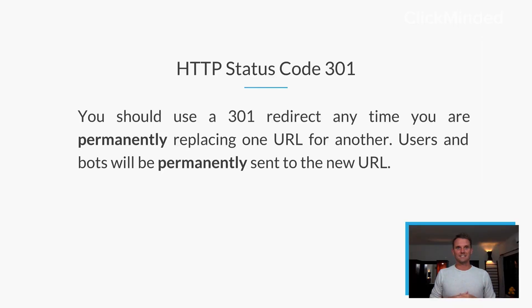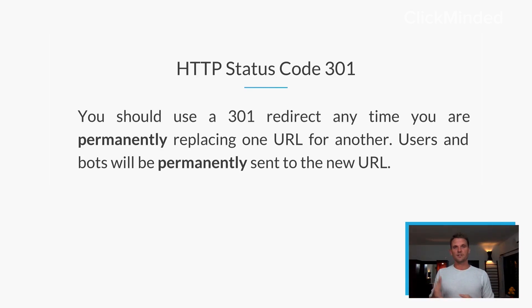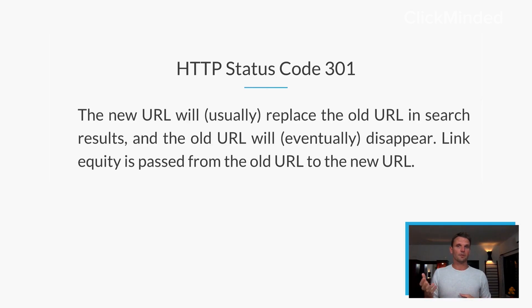Those are the basics around the HTTP protocol. Now let's dive into what a 301 is. HTTP status code 301 is a moved permanently response — this is a redirection. A 301 redirect is used anytime you're permanently replacing a URL for another URL. Users and bots are permanently moved to the new destination URL. The new URL usually replaces the old URL in search results, and the old URL will also eventually disappear.